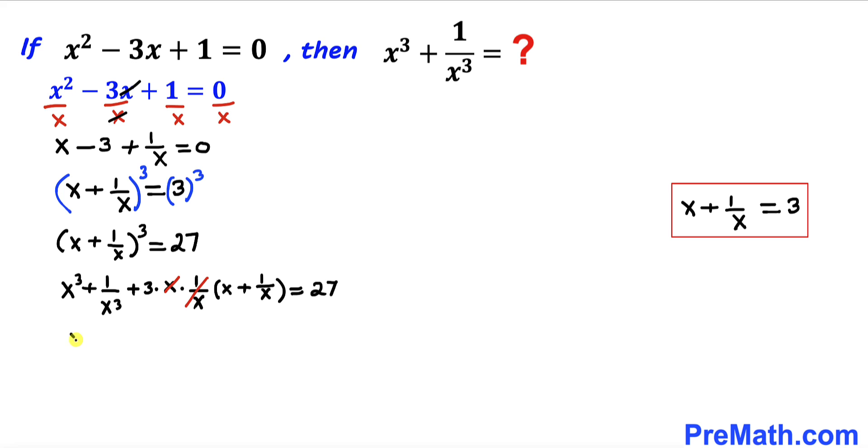So therefore we ended up with x power 3 plus 1 divided by x cubed plus 3 times x plus 1 divided by x equals to 27.